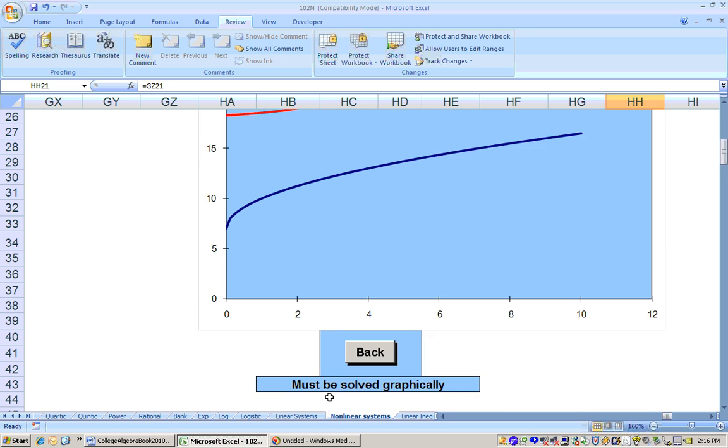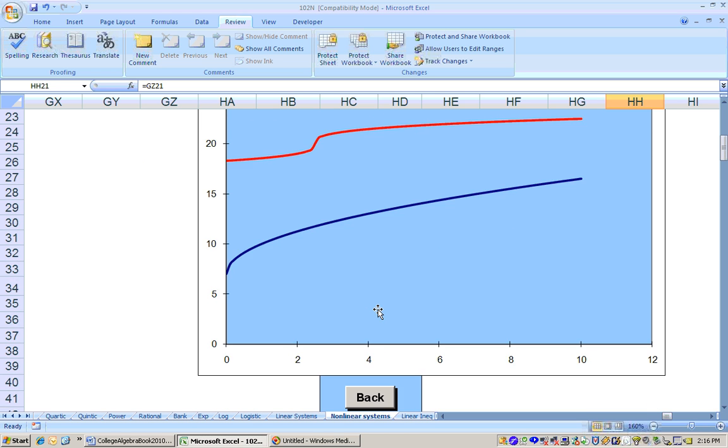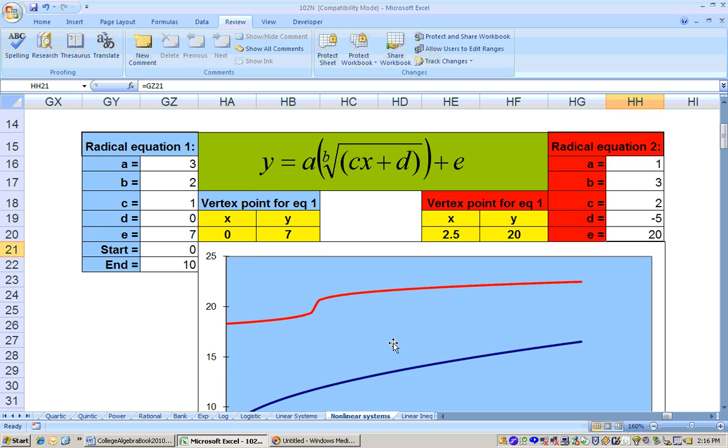Now, scroll down and guess what? There's no find solutions button. So it has to be solved graphically. Now the blue is the square root, which is 1 half power. And the red graph is the cube root button, which is 1 third power. These will intersect because 1 half is bigger than 1 third. So eventually this graph will catch up with this graph.